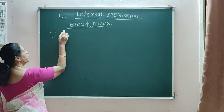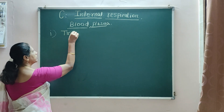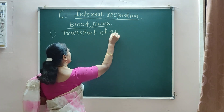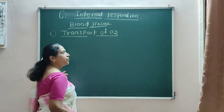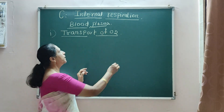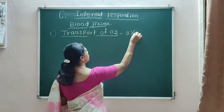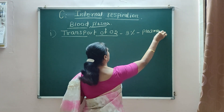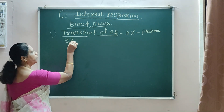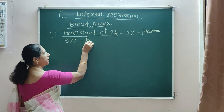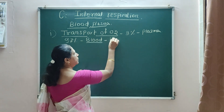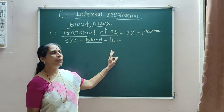The first is transport of O2. This transport of O2 takes place by plasma and blood, in which 3% of O2 is transported by plasma in dissolved state, while 97% of O2 is transported by blood, and the blood contains hemoglobin which acts as a respiratory pigment.